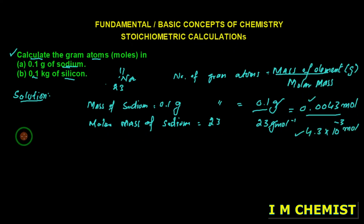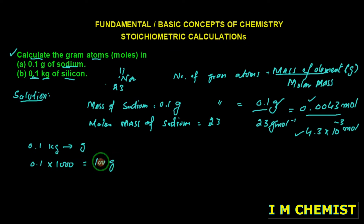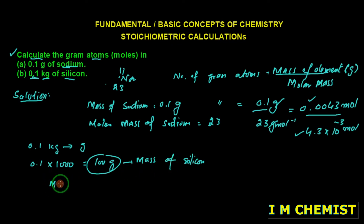Now for the second part: 0.1 kg of silicon. First, we have to convert 0.1 kg into grams. Multiplying 0.1 by 1000, we get 100 grams — this is the mass of silicon that is given. The molar mass for silicon is 28.086 grams per mole.